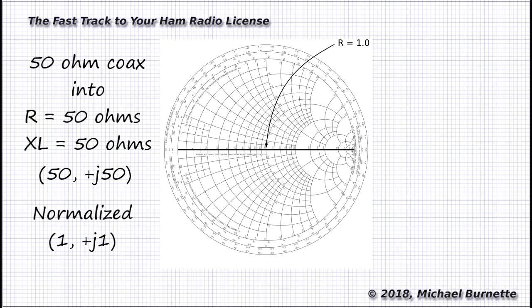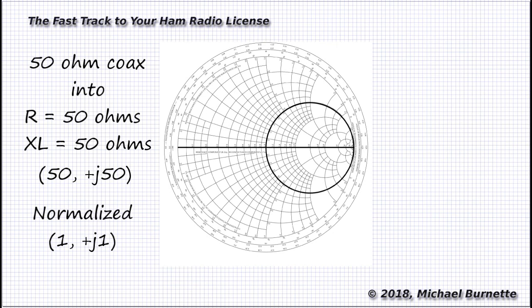Next, we grab a gigantic number 2 pencil and trace the resistance circle that crosses the resistance axis at that 1.0 point. That circle shows a resistance of 1.0 normalized ohms at every point. It doesn't really mean much of anything yet, though.